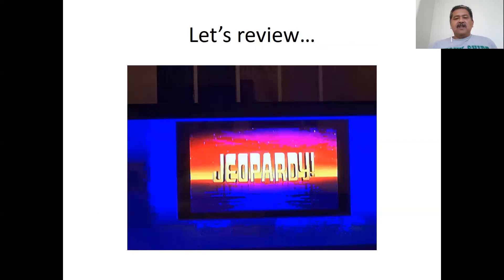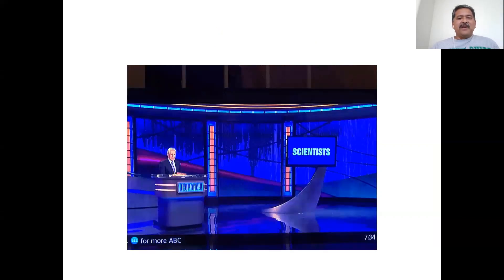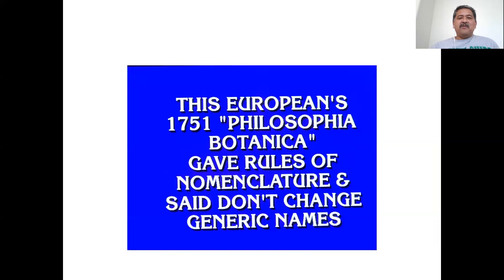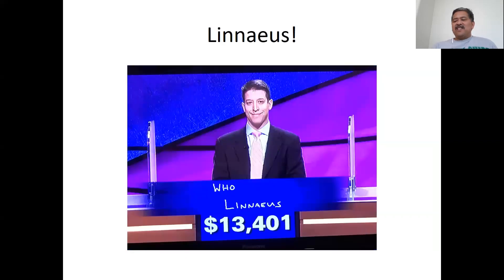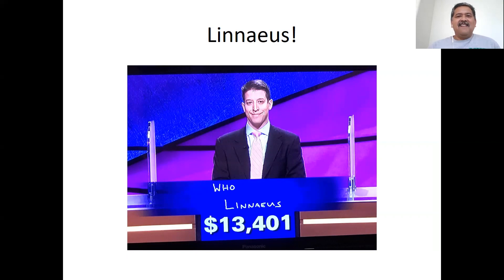Let's see if you got what you need to know. Here's our Jeopardy slide with Alex Trebek — this was the final question: this European, 1751, Philosophia Botanica, gave rules and nomenclature and said don't change generic names. If you said Linnaeus, you could have won on Jeopardy. I'm Mr. Vallejo, and this is Taxonomy. We'll see you next time. Bye now.